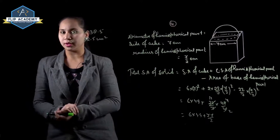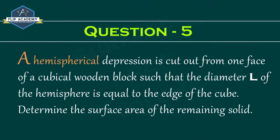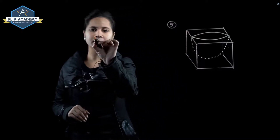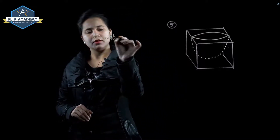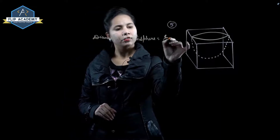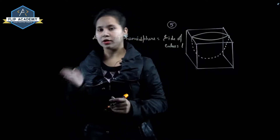Surface area and volume, exercise 13.1, question number 5. A hemispherical depression is cut out from a face of a cubical wooden block such that the diameter l of the hemisphere is equal to the edge of the cube. Determine the surface area of the remaining solid. Given: diameter of hemisphere equals side of cube, equal to l.